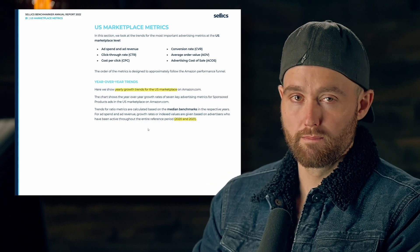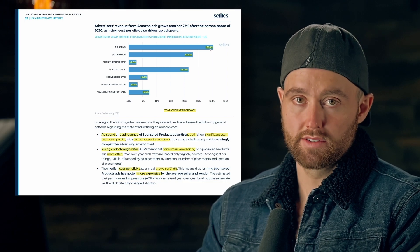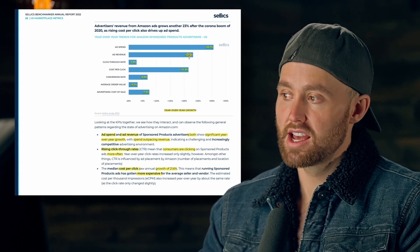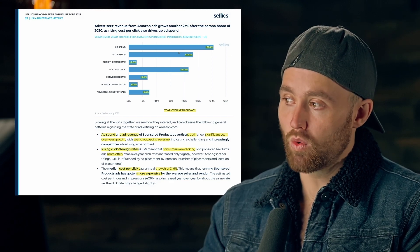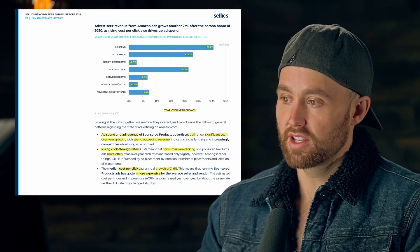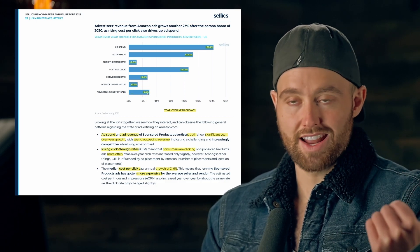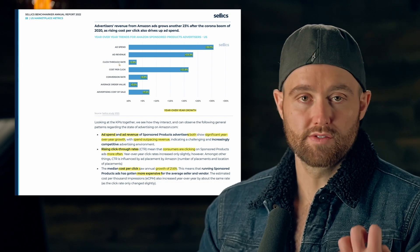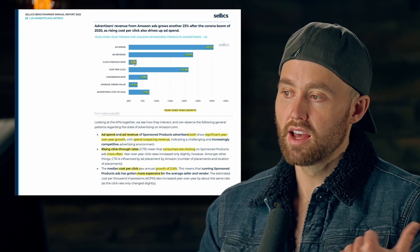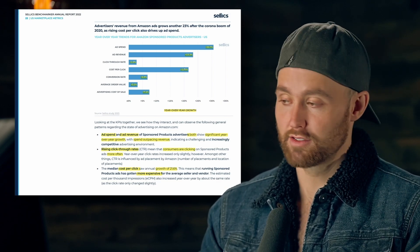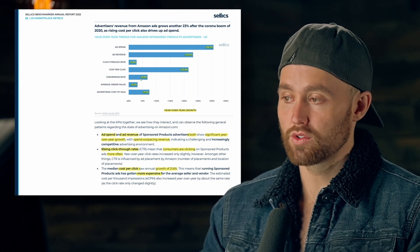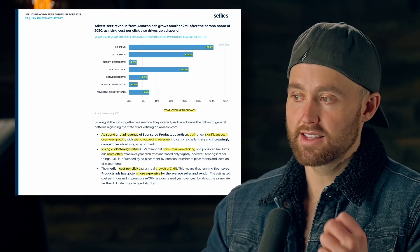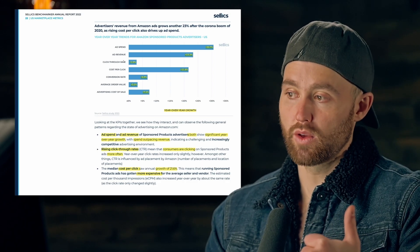Looking at yearly growth trends for the US marketplace from 2020 to 2021: ad spend increased 30 percent on average, while ad revenue grew only 23 percent — which is why ACoS is higher. ACoS itself saw a 7.5 percent increase. Click-through rate is up almost 3 percent, cost per click is up almost 22 percent, conversion rate is up almost 7 percent, and average order value is up 3.2 percent. Remember, these are percentage increases from 2020 to 2021, not the actual values.